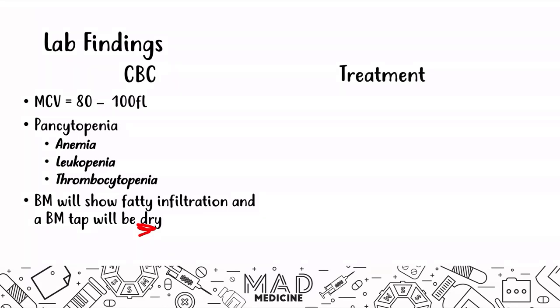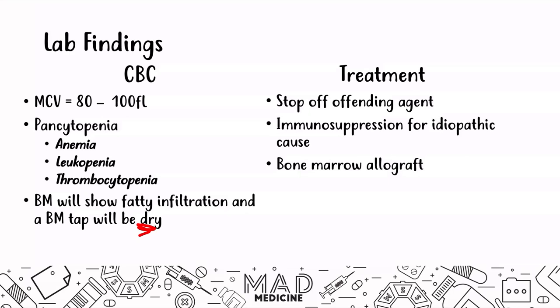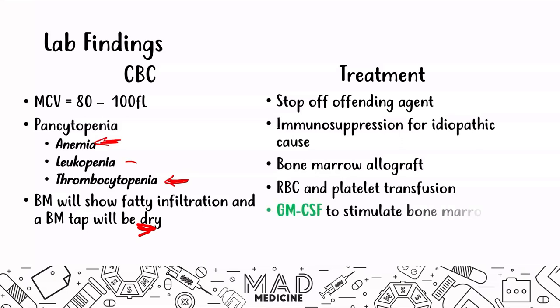Treatment depends on the cause. If caused by medications, stop the offending agent. If idiopathic or immune-mediated, give immunosuppression. A bone marrow allograft is another option. You can also give red blood cells and platelets to address the anemia and thrombocytopenia, and GM-CSF to stimulate bone marrow production of white blood cells, red blood cells, and platelets.